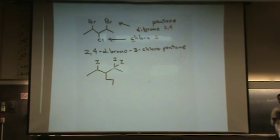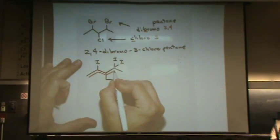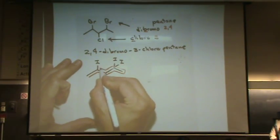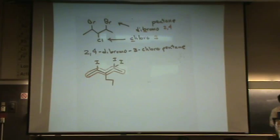So, in this case, and sometimes this will happen, you won't be able to take the longest possible chain when you name. For example, you have to take, I'll do it in red, you have to take this chain right here. Because that chain has all the functional groups. Make sense?